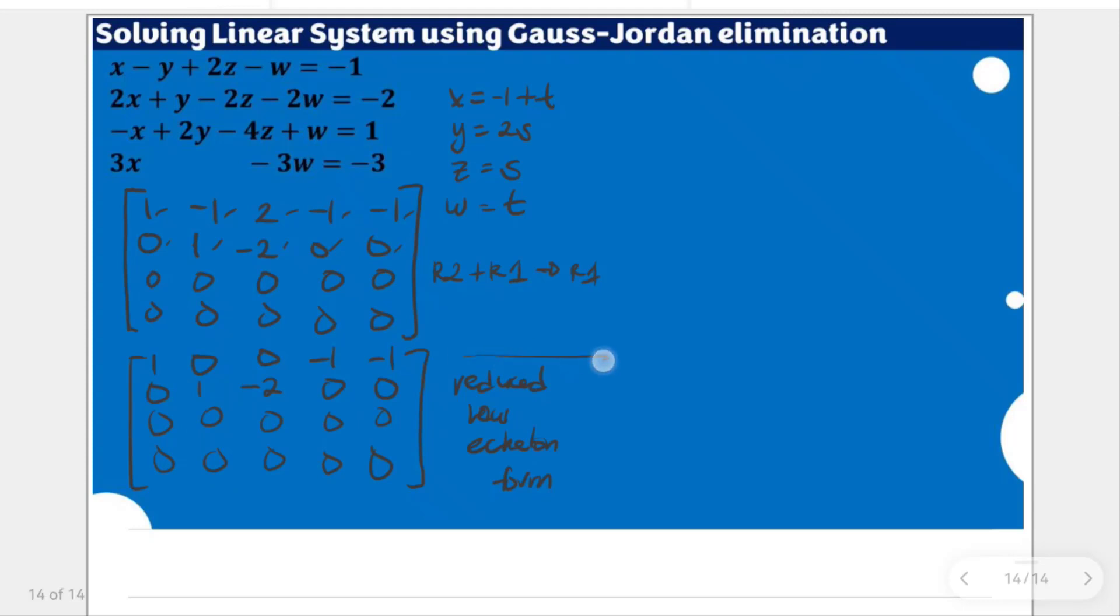And with this, we would come up with these equations. The first row will return to x - w, we don't have y and z, is equal to -1. And the second row, we'll have y - 2z is equal to 0.